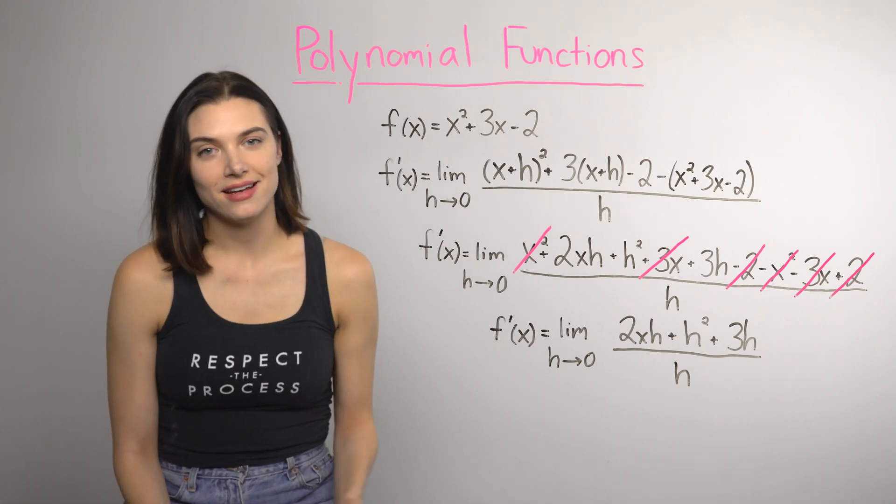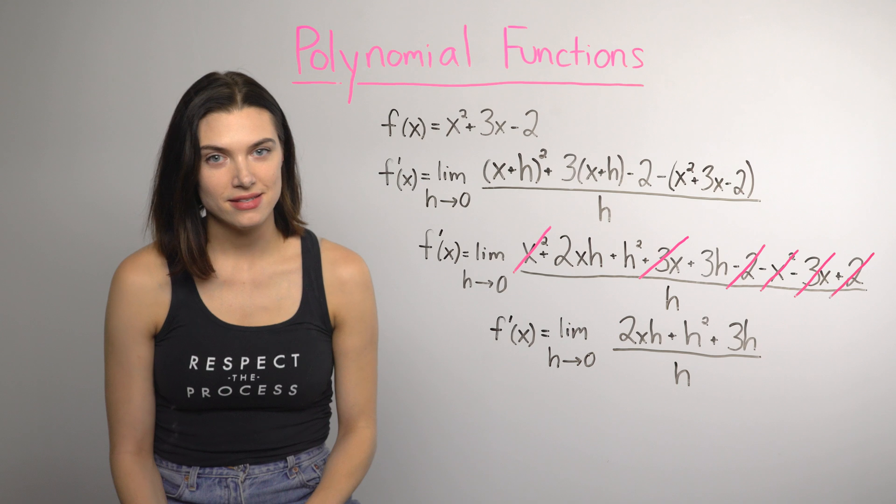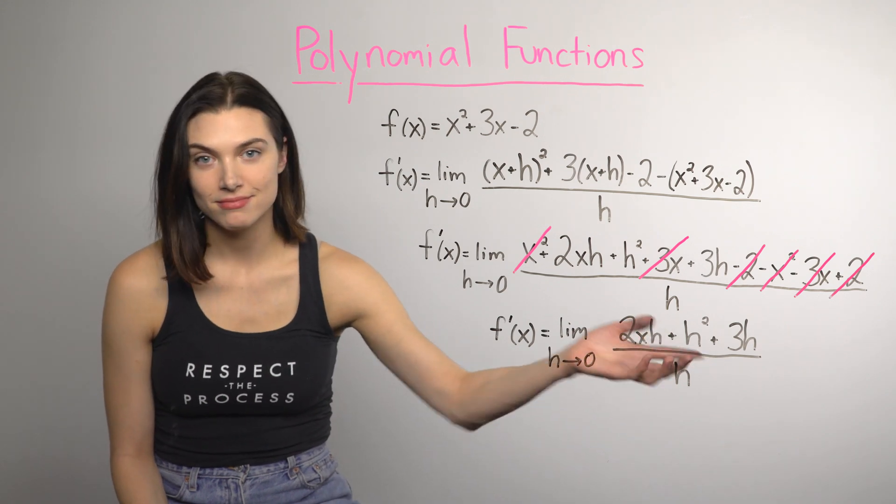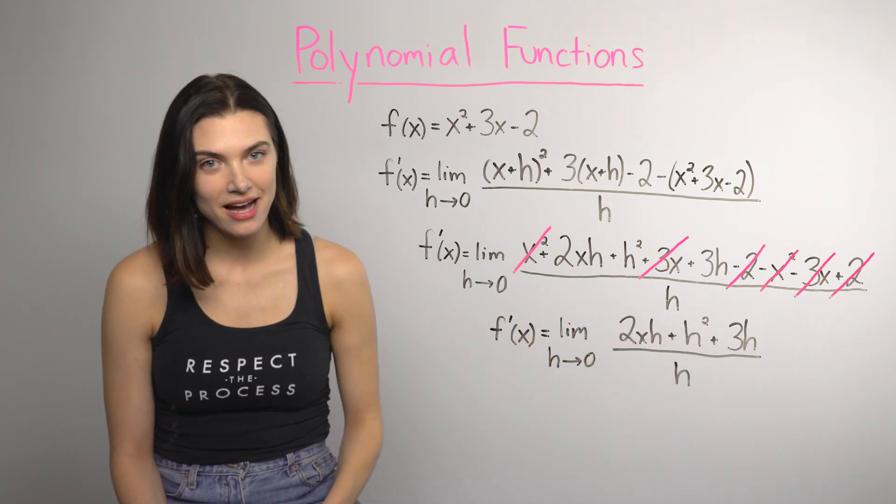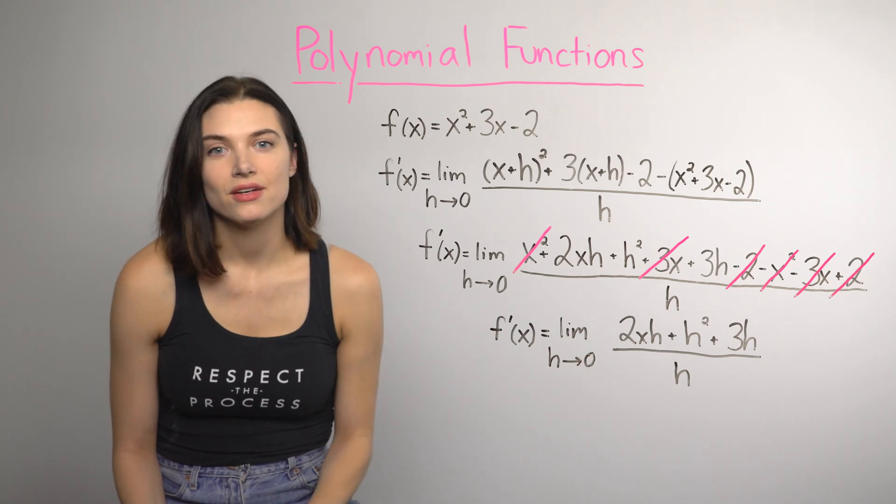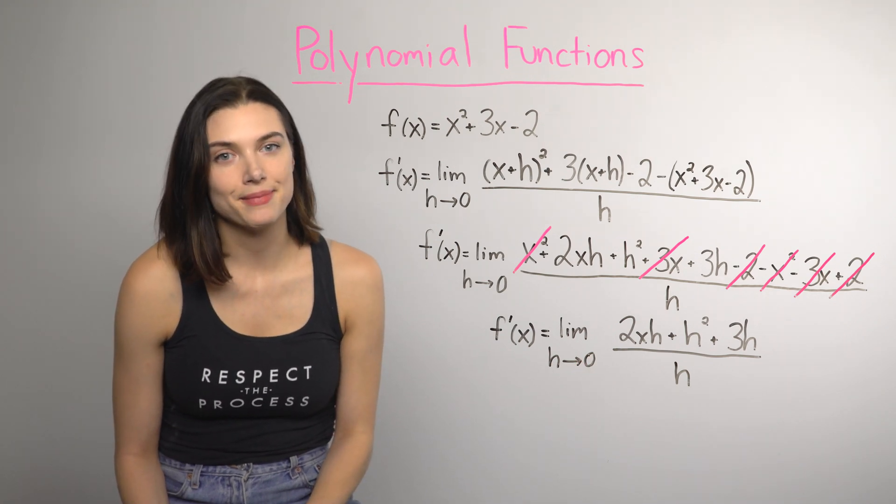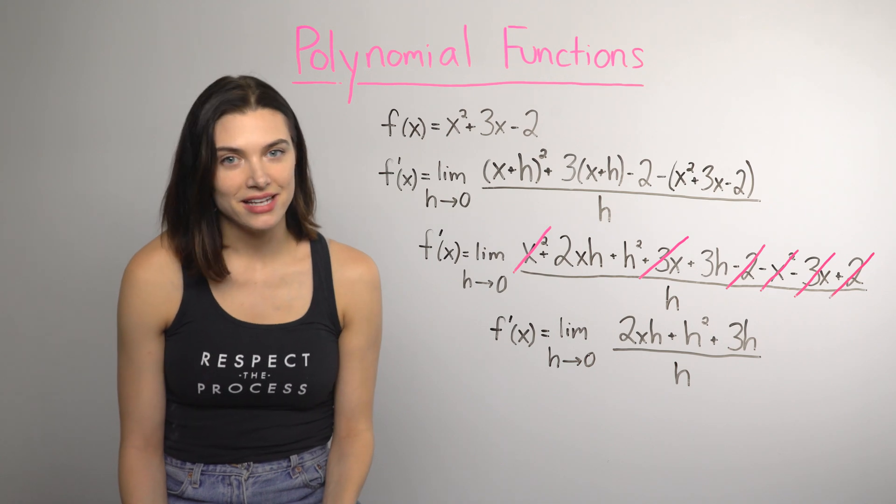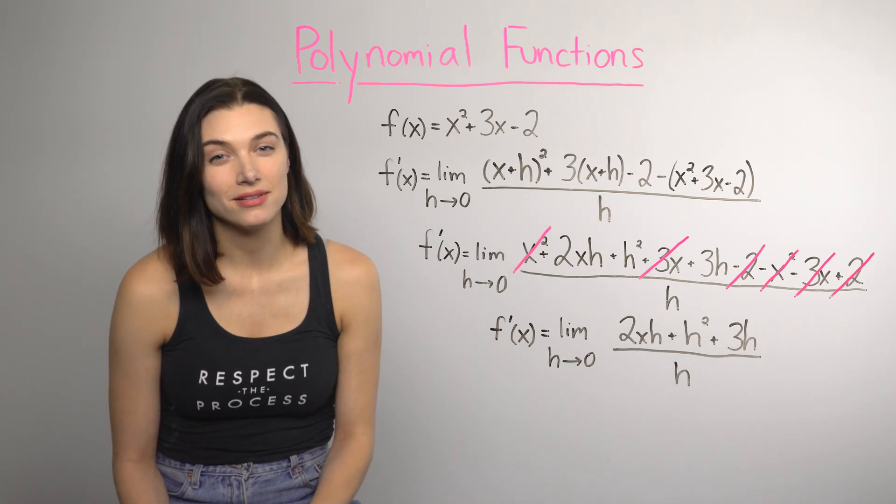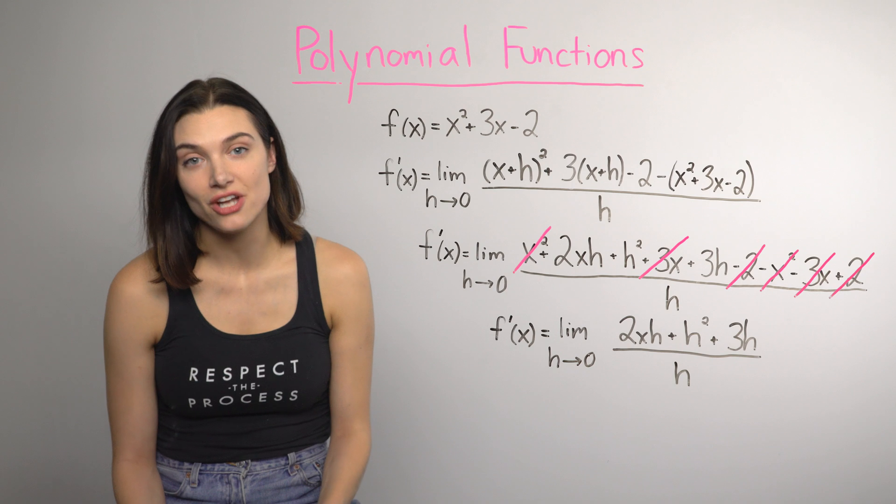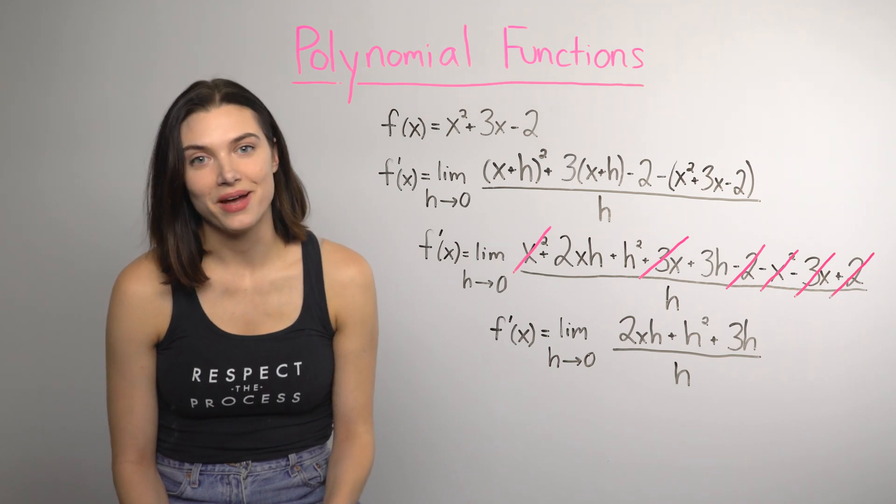Okay, it's reduced and not looking so crazy anymore. See how there are h's in every term? That's great. We can factor it out and get rid of this h in the denominator. When you're finding the derivative using the limit definition, factoring out an h in the numerator is going to come up a lot as a way to cancel the h in the denominator. So, I'll factor out the h and cancel it away.